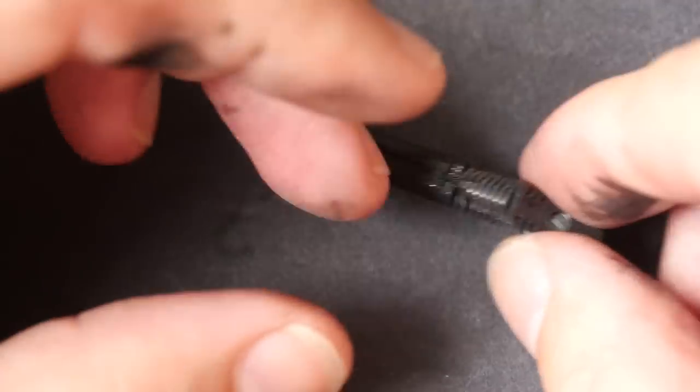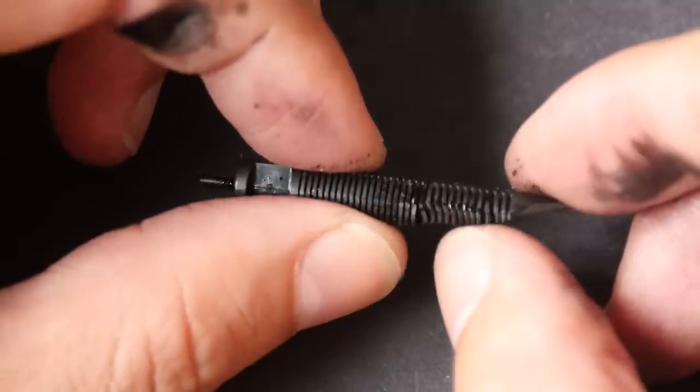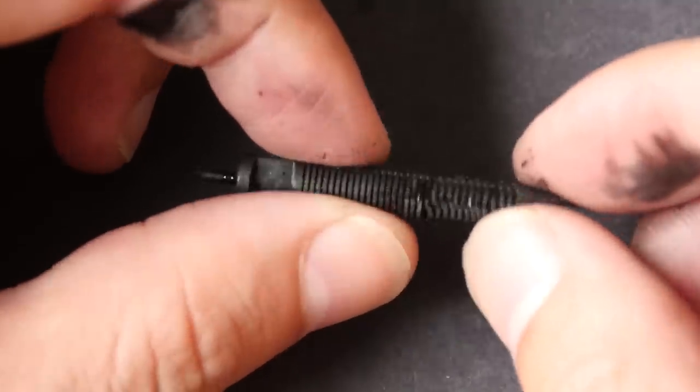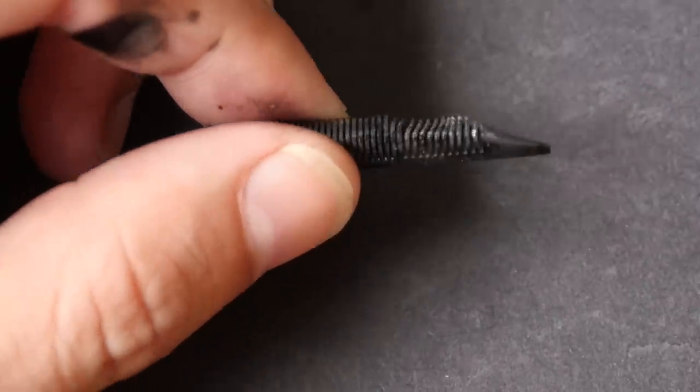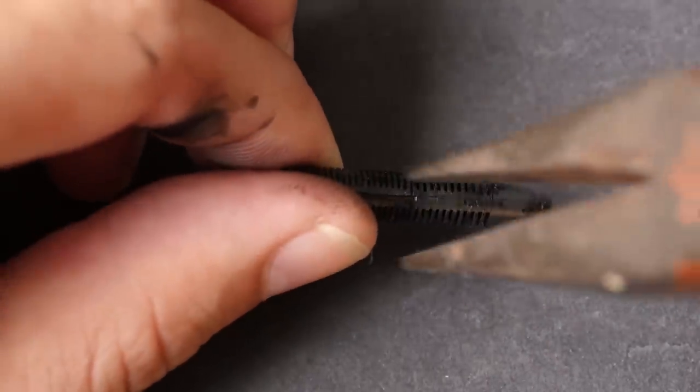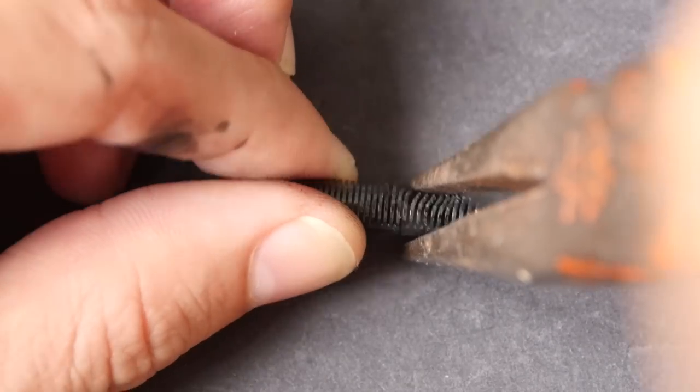But it should still be usable. So you can see I somehow damaged the feed section a bit but it should still be usable. So remember, go at the nib like this instead of like this. This is going to bend the feed.